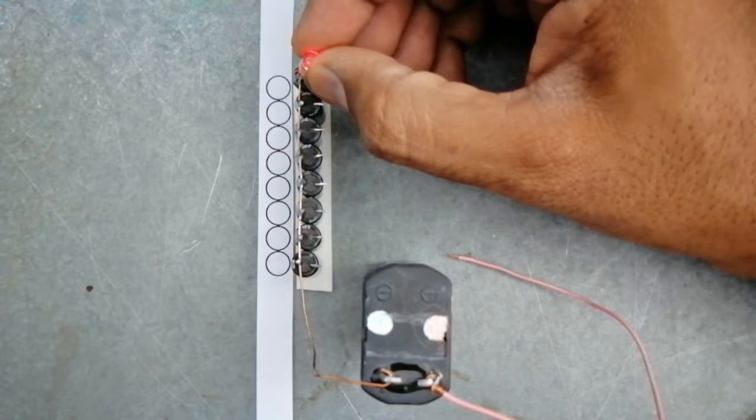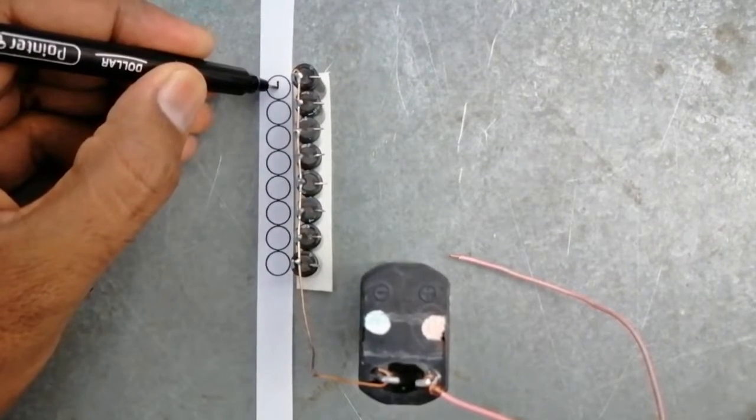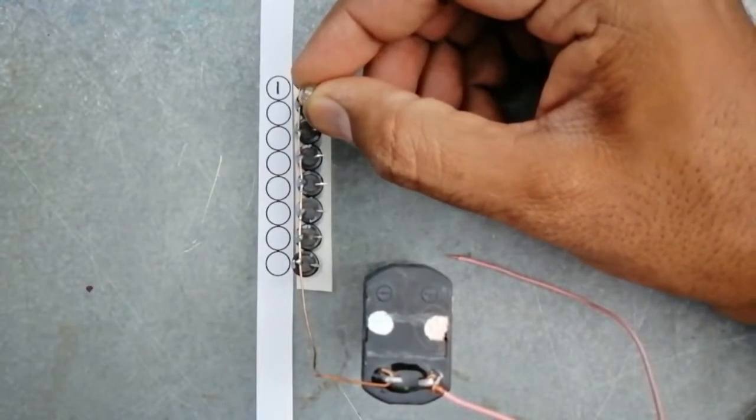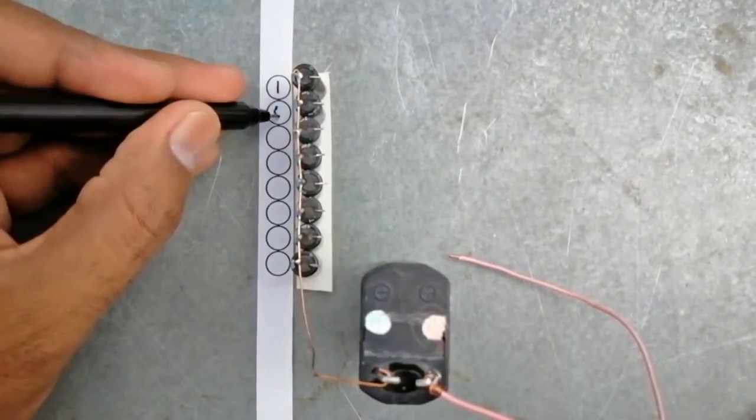Great, our bulb is lighted. That means it has a value of one. Let's write it. Check the next bit. There is no light, it consists of zero. Put zero.